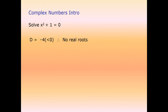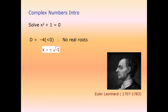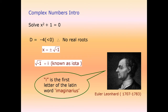Euler introduced complex numbers to solve equations where the discriminant is negative — meaning no real roots. Euler Leonard introduced the new term iota, defined as the square root of minus 1. Iota is the first letter of the Latin word 'imaginarius'.